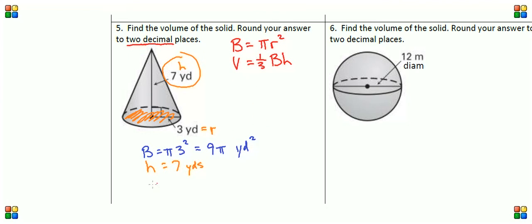And then we have our calculation for our volume, which is equal to one-third times the area of the base, which is 9 pi, times the height, which is 7.